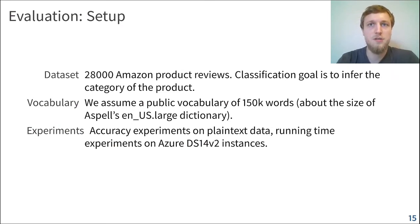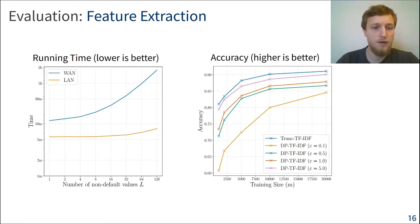And now the question is, of course, how much does using the sparsity improve our computation times, and also how much does the accuracy decrease because of the differentially private pre-computation that we do? To find that out, we conducted an experiment on a dataset of 28,000 Amazon product reviews. And here the goal is to infer the category of the product by just looking at the review. We assume a public vocabulary of 150,000 words, which is about the size of a large English dictionary. And we perform accuracy experiments on plain text data in a local setting and running time experiments in the Azure cloud. So for feature extraction, if we look at the number of non-default values, so the number of values that we sample in our tree-based sampling approach, and look at the running time depending on that, then we will see that it barely impacts the running time for all the values we tested from 1 to 128. So the time stays under 10 minutes for all cases, and that's pretty good for a one-time pre-computation.